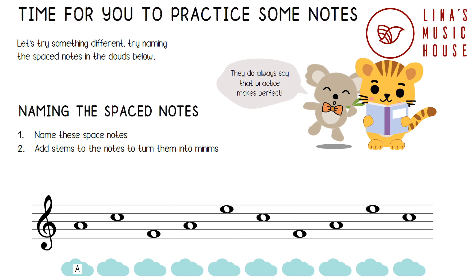The next note is in the third space. The third letter in FACE is C, so this is a C note. The next note is in the second space, so this is an A note. The next note is in the fourth space, so this is an E note. The next note is in the third space, so this is a C note.